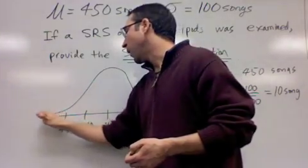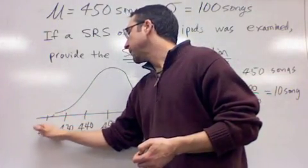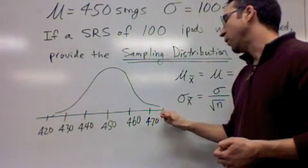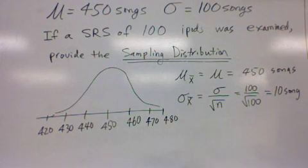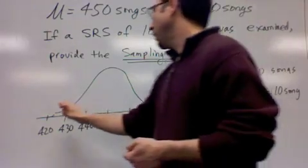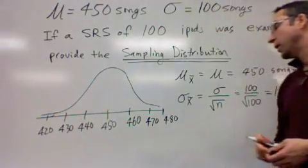And you can even march out even farther than that. The general rule of thumb is about 99.7% of the data or the statistics would appear between 420 and 480.